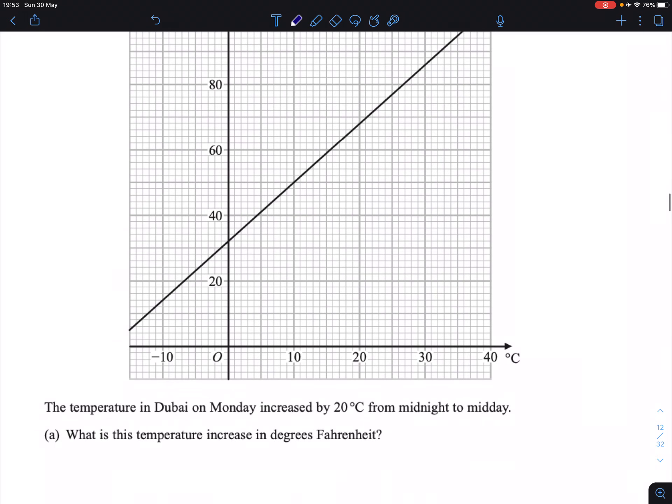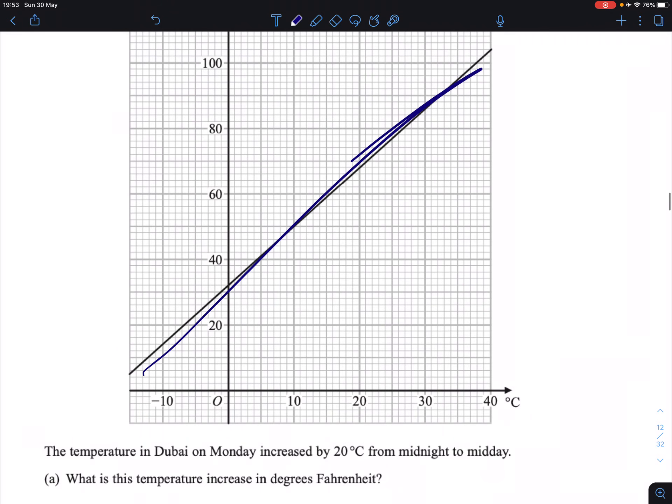So, first question here. The temperature in Dubai on Monday increased by 20 degrees Celsius from midnight to midday. What is the temperature increase in degrees Fahrenheit? Well, because this is a straight line, it doesn't matter how we take this increase by 20 degrees.